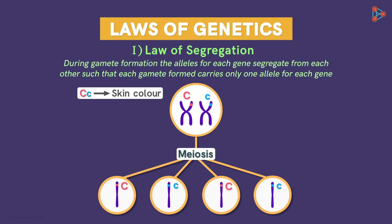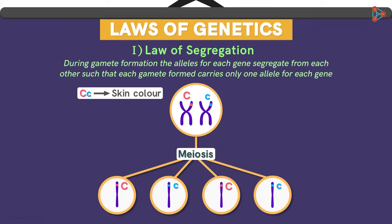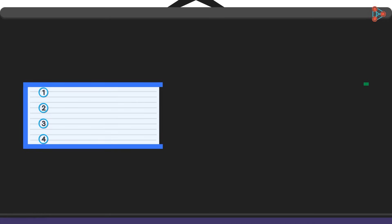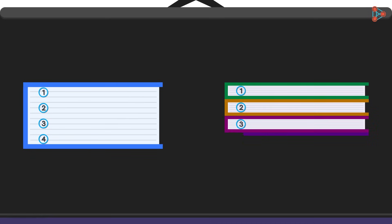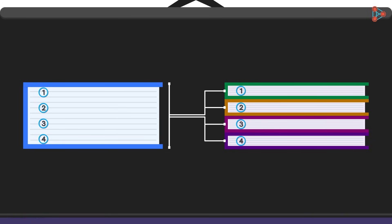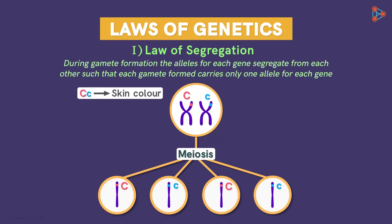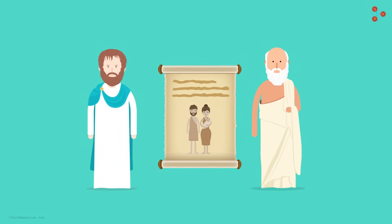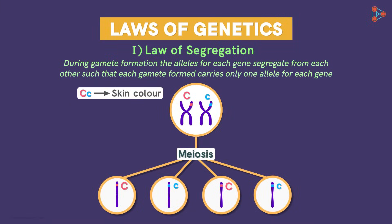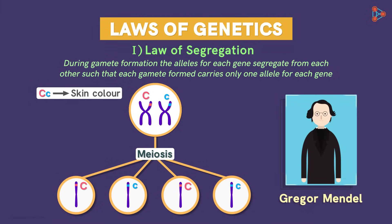To summarise, the alleles for a gene segregate during gamete formation. This law sounds very obvious to us now — it's like having a big book with many chapters and then making smaller books for each chapter, where it's obvious the smaller books will resemble the content of the big book. This law sounds obvious also because we know the process of meiosis, but nobody knew this back in earlier times. Hence, it was hypothesised by Mendel and then accepted as a law later.